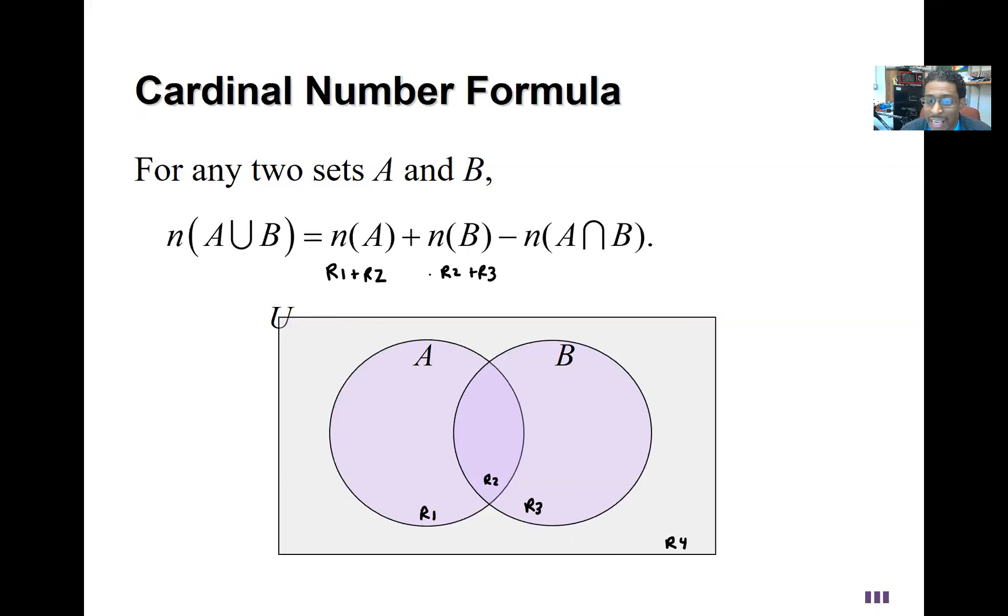So what's been done here is region two is counted twice. And so what we do then is subtract off region two, that's the intersection. In doing that we get the union which is definitely region one, region two, and region three.